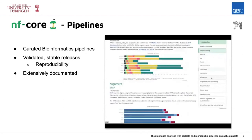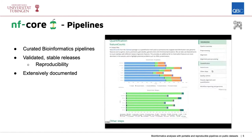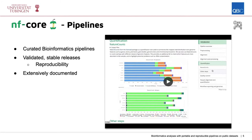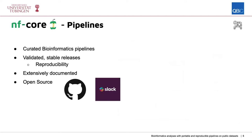NFCore pipelines are extensively documented. For example, with the RNA-seq pipeline, each plot and output file is explained — some even include guidance on how a plot should look and what may have gone wrong if it looks different. All the code is open source and available on GitHub. There's also a Slack workspace where users and developers can talk to each other, exchange ideas, and get help during development or usage of the pipelines.